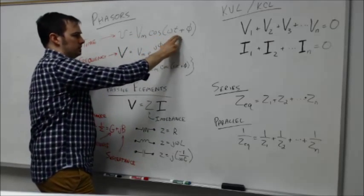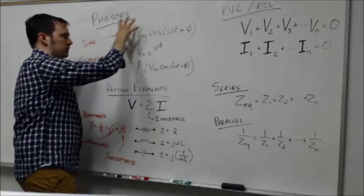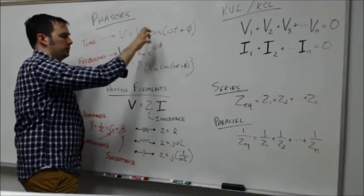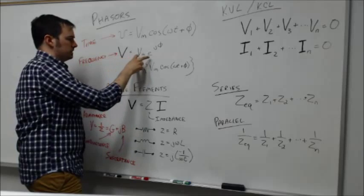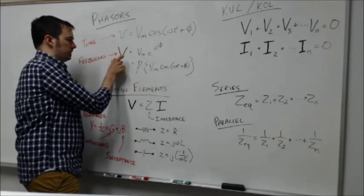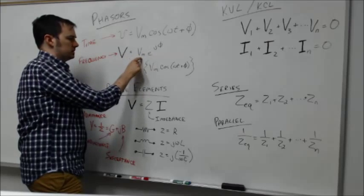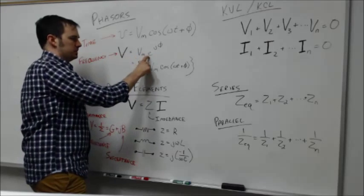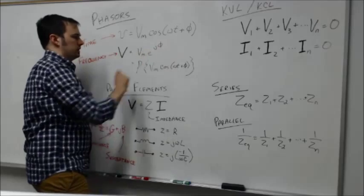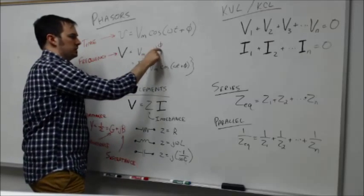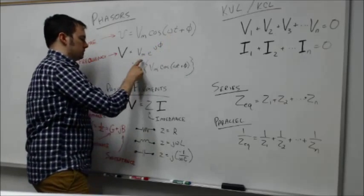We showed how we were able to transform that through this phasor transform into this notation where the phasor V, the voltage, is the max voltage still, but with this exponential term to the J phi. Phi here is the phase angle.